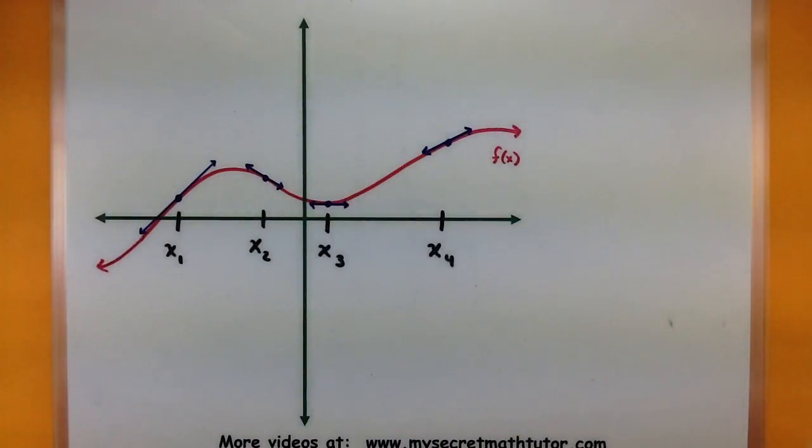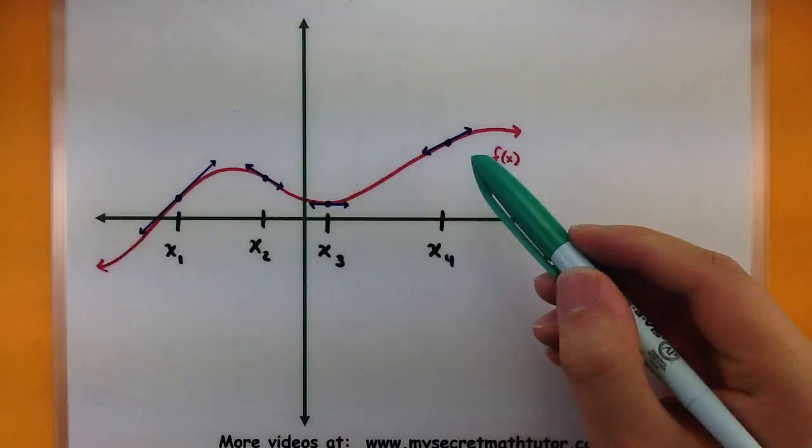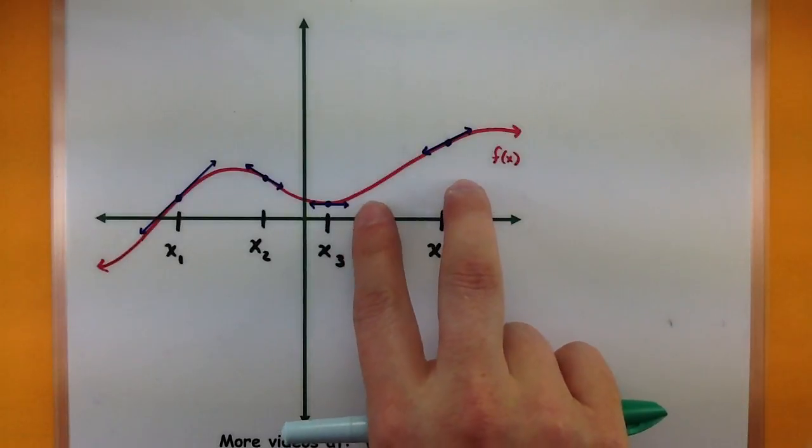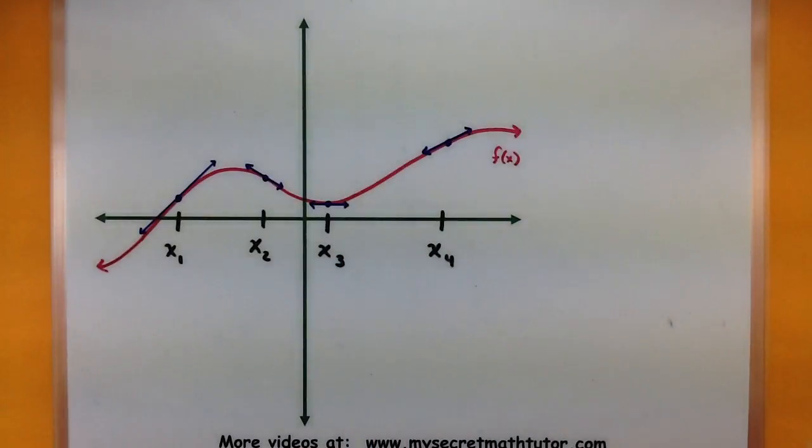So as you can see, the derivative gives us information about what our function is doing, how much it is changing. And we're getting that information from the slope of the tangent line. And to compute the slope of that tangent line, we look at the limit of the secant lines as they get really close to that point. So that's a lot of information about the derivative.